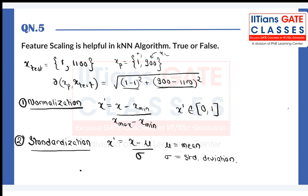Which method is better depends on the dataset. In KNN, what people typically do is apply normalization, find the optimal K value, train the model and get a score; then apply standardization, repeat the process, and whichever gives the better score becomes the final approach for that dataset.